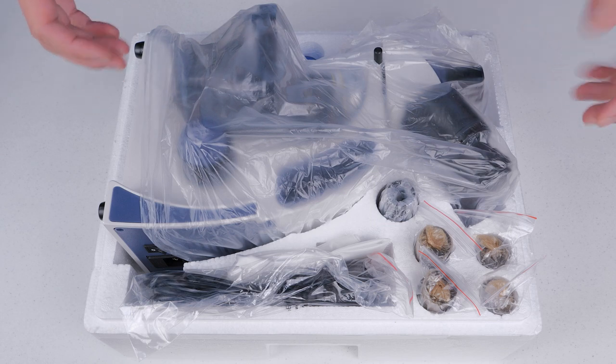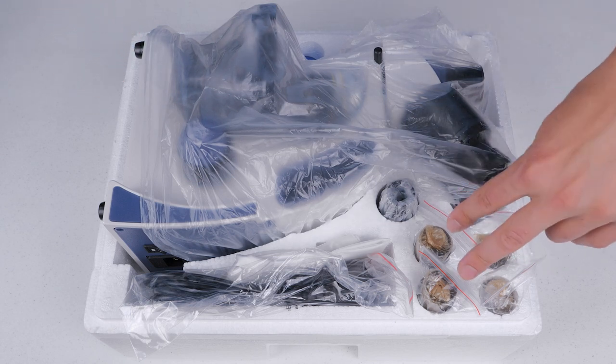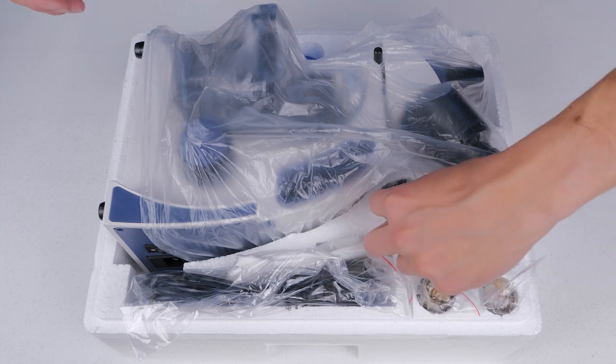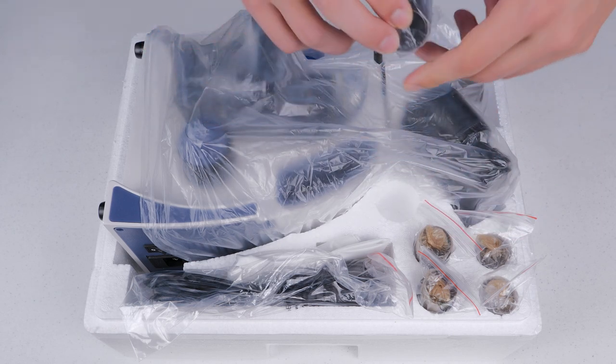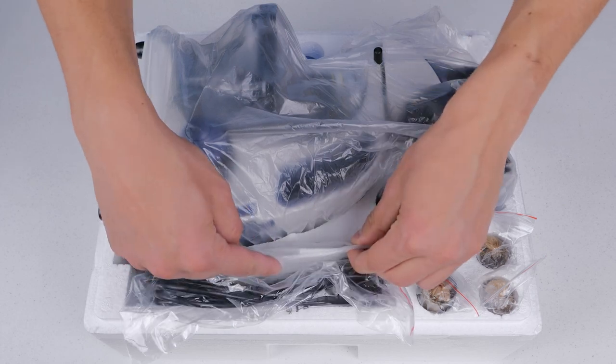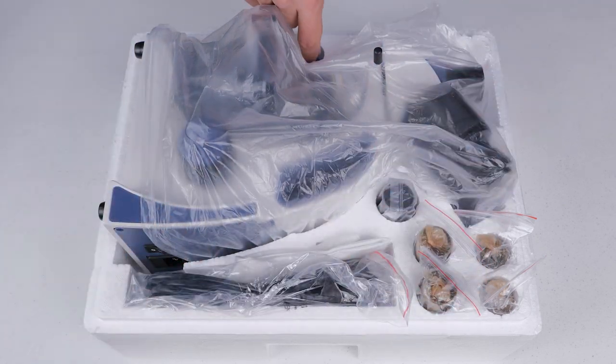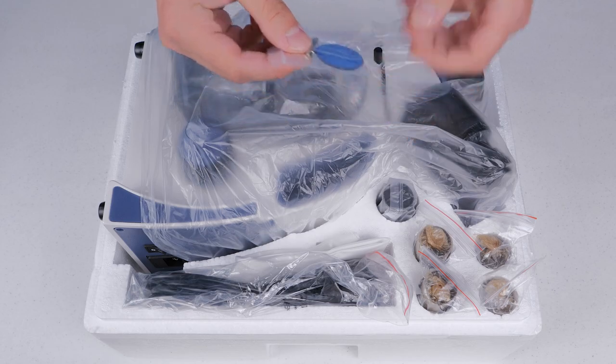In the microscope box we have the microscope itself, two 25X eyepieces, two 10X eyepieces, a C mount adapter for the camera, a dust cover, a table, a blue light filter, and a fuse for the microscope.